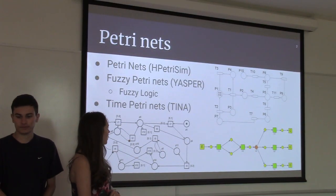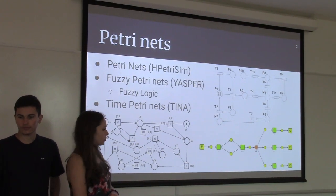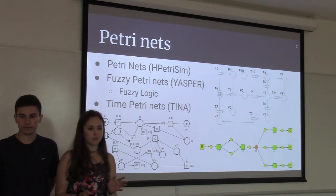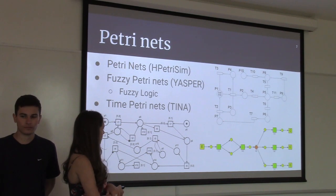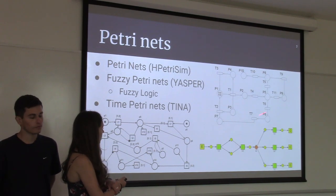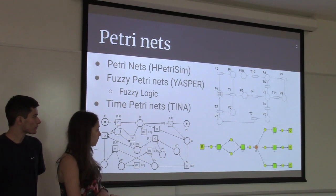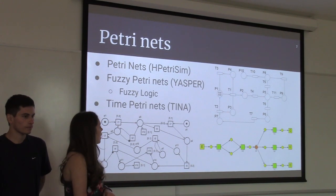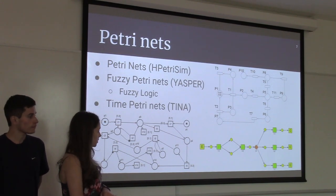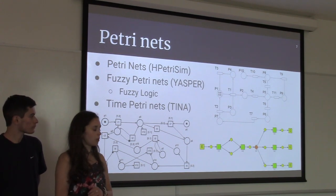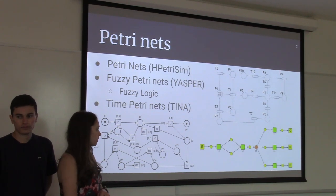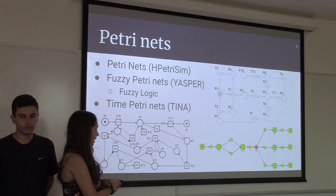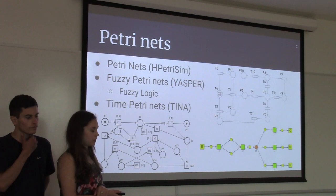A basic Petri Net is a modeling system used to represent a variety of complex control systems. Here's an example of a basic Petri Net. There are four main parts: the places, which are represented by the open circles; the rectangles, which are the transitions; the arrows are the arcs; and the closed circles are the tokens. The tokens flow through the transitions and places through the entire system.